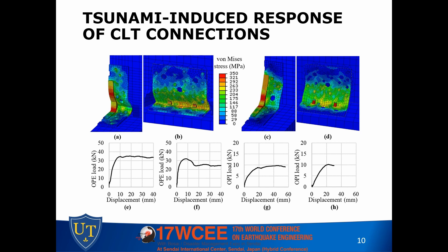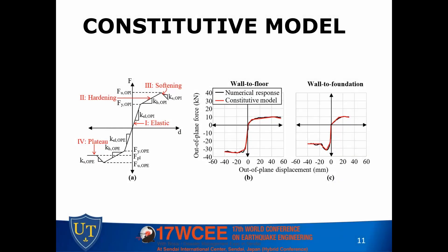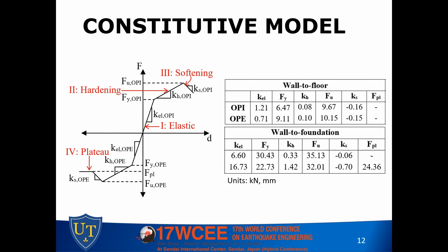This paper builds on the previous journal paper by taking the constitutive response calculated there and creating a constitutive model from it. On the right, the two graphs show in black the numerical response from the previous paper, and overlaid in red is our constitutive model. On the left, letter A shows all the parameters of that constitutive model — ten parameters for the wall-to-floor model and an eleventh for the wall-to-foundation model, divided into four branches: elastic, hardening, softening, and plateau. The first step was to go back and obtain those ten parameters that represented the observed behavior.